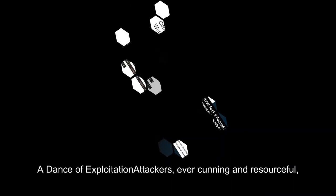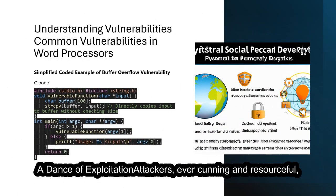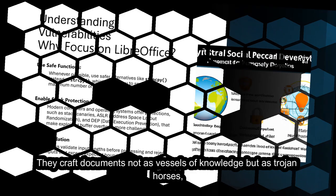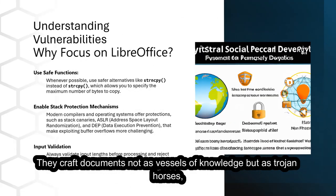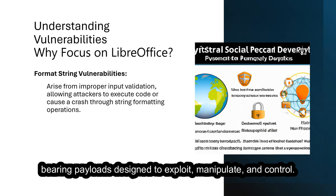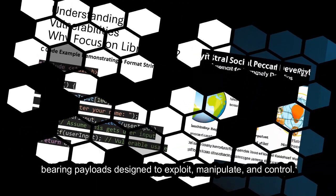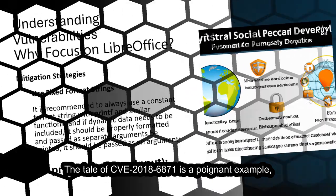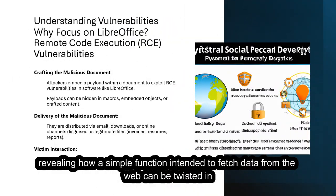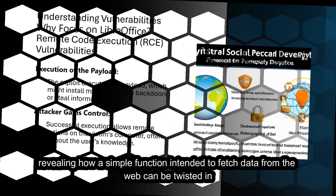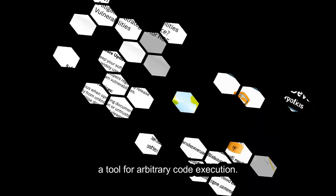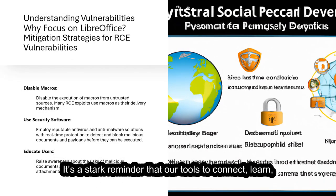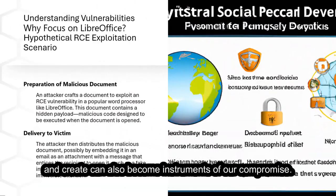Attackers, ever cunning and resourceful, dance through these vulnerabilities with choreography of exploitation. They craft documents not as vessels of knowledge, but as Trojan horses bearing payloads designed to exploit, manipulate, and control. The tale of CVE-2018-6871 is a poignant example, revealing how a simple function intended to fetch data from the web can be twisted into a tool for arbitrary code execution. It's a stark reminder that our tools to connect, learn, and create can also become instruments of our compromise.